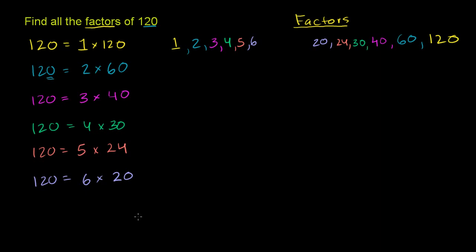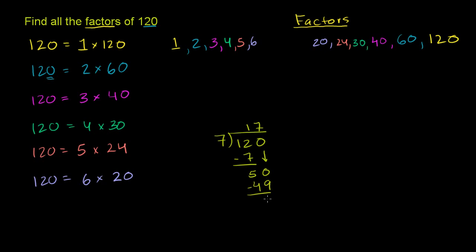Now let's think about 7. 7 is a very bizarre number — let's just try to divide 7 into 120. 7 doesn't go into 1; it goes into 12 one time; 1 times 7 is 7; subtract, 12 minus 7 is 5; bring down the 0; 7 goes into 50, 7 times; 7 times 7 is 49; subtract — you have a remainder. So 7 does not divide evenly. 7 does not work.